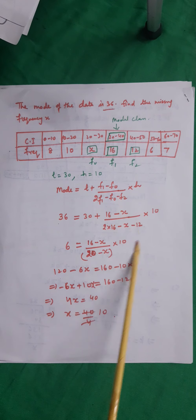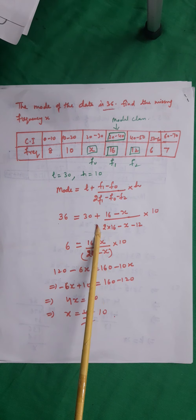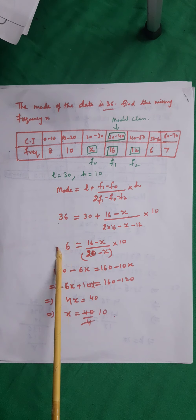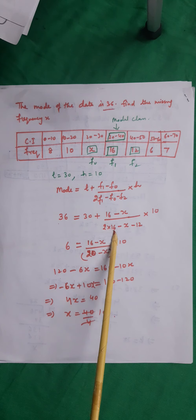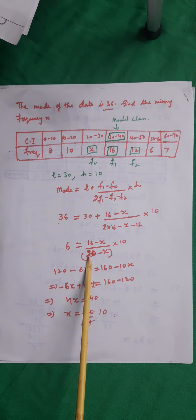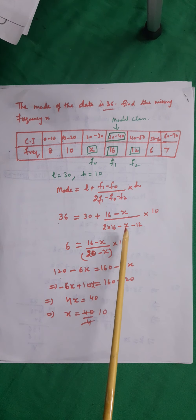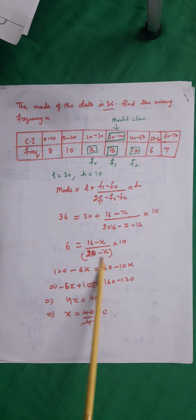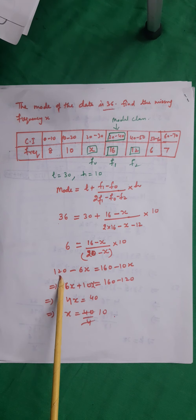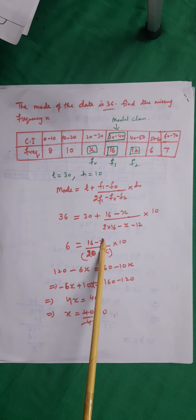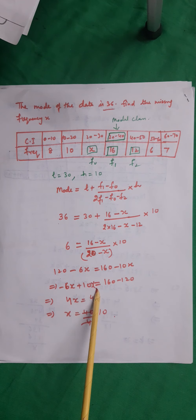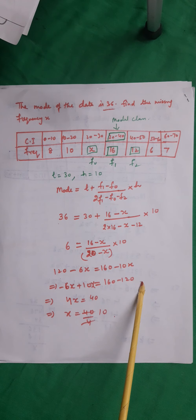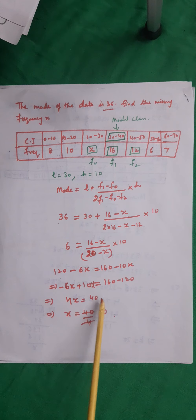Bringing 30 to the left: 36 minus 30 equals 6, which equals (16 minus X) upon (32 minus 12 minus X) into 10, giving 6 equals (16 minus X) upon (20 minus X) into 10. Cross-multiplying: 120 minus 6X equals 160 minus 10X. This gives 4X equals 40, so X equals 10.